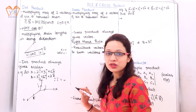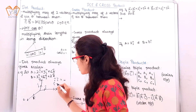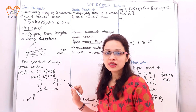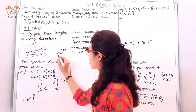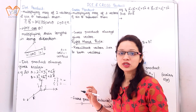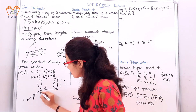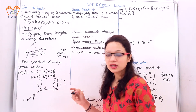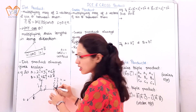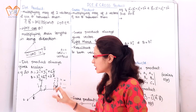So we get a magnitude of 1. Now if we consider î · ĵ, the angle between them is 90° and cos90° = 0, so the result is 0. Similarly for î · k̂, the angle between them is also 90°, so the output is 0. This applies for the î unit vector with î, ĵ, and k̂, and similarly for ĵ and k̂.